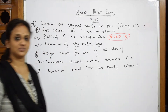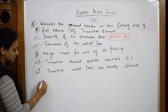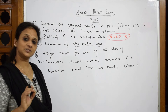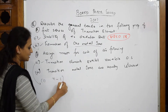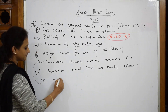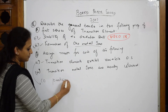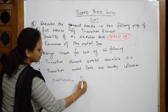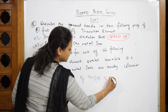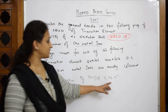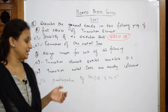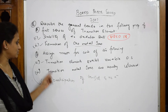Transition elements exhibit variable oxidation state. If you have to write why they exhibit variable oxidation state, because of only one keyword: participation of (n-1)d and ns electrons. Because of the participation of (n-1)d and ns electrons, they show variable oxidation state ranging from plus 1 in copper to plus 7 in manganese. This is your keyword and it is important for this question.